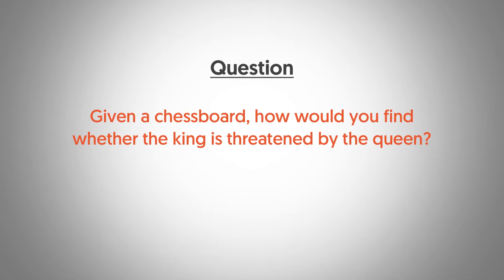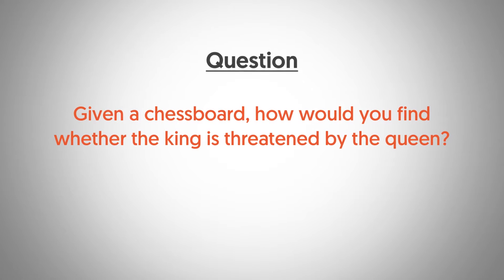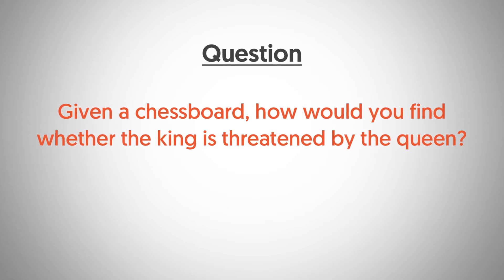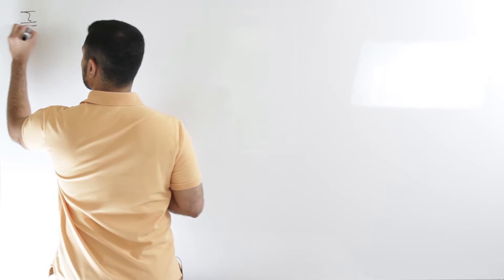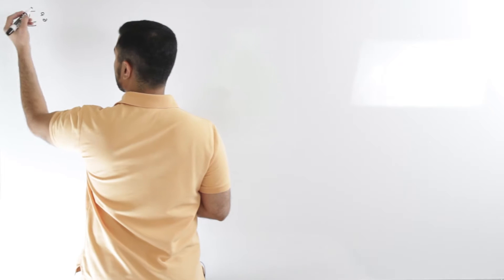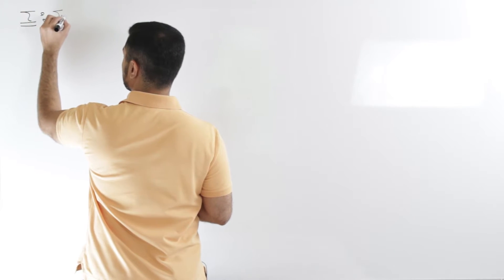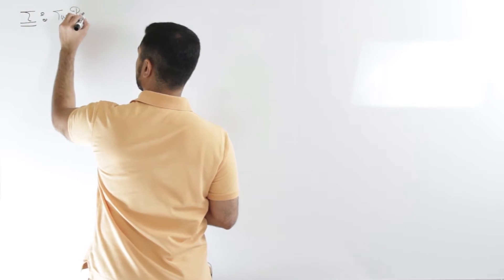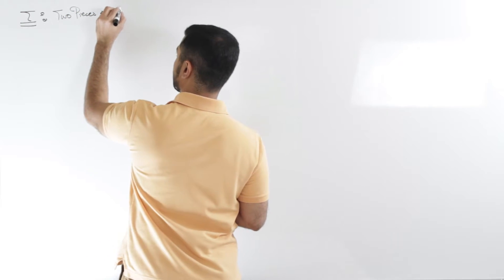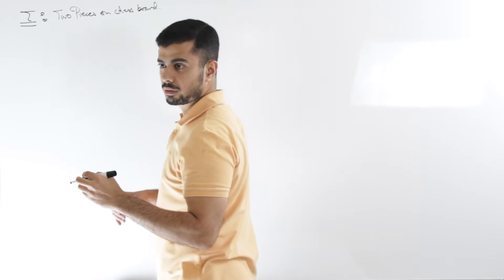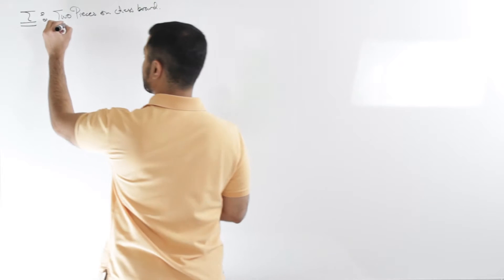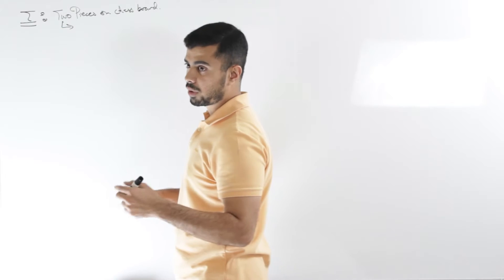This week's problem: you're given a king and a queen on a chessboard — how would you determine if the king is threatened by the queen or not? I understand the problem at a high level, but let me write it down. So the input is the two pieces on the chessboard — more precisely, the coordinates of the king and the queen, as x-y coordinates.